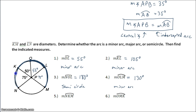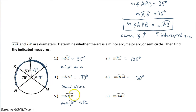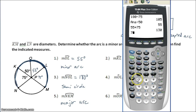Arc NKM is going to be a major arc — I'm covering more than half of the circle. From N to K to M, I add up all the angles: 75 plus 50 plus 55 plus 75.